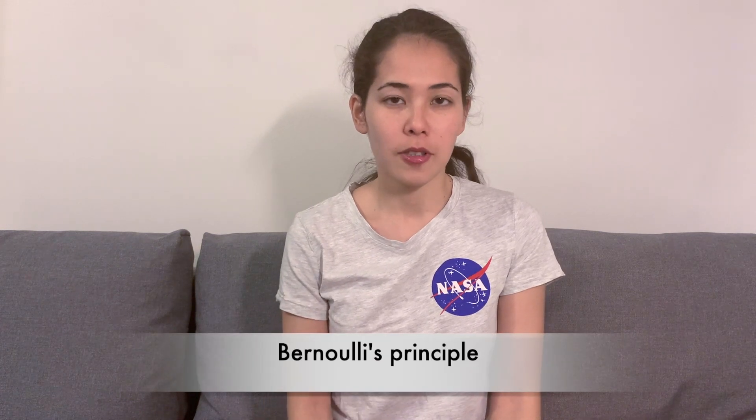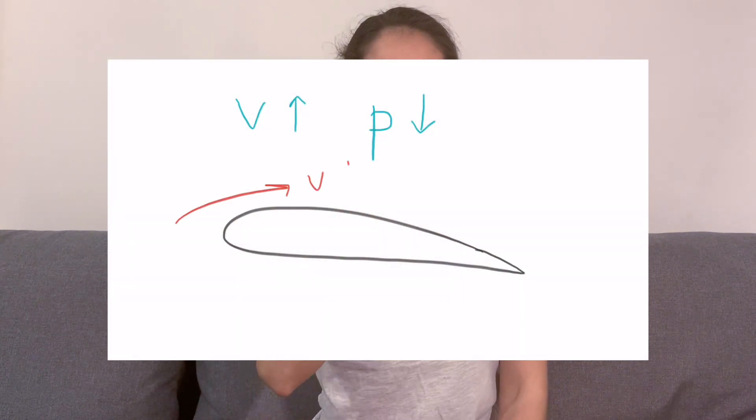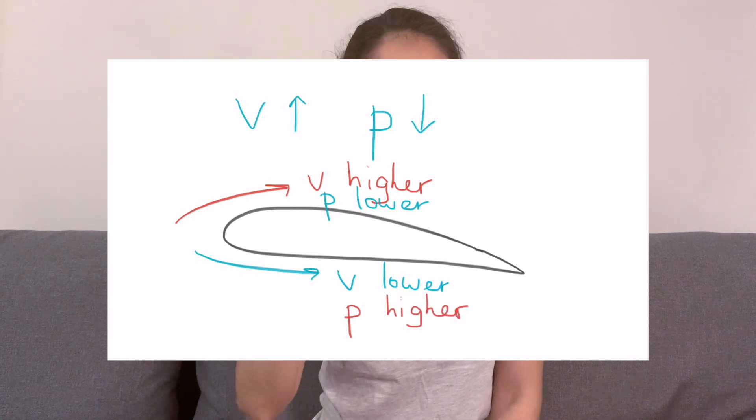We talked about lift a few videos back, and some people commented that that theory was wrong. But in reality it's not entirely wrong. That principle of lift generation was based on Bernoulli's principle: if fluid velocity increases, the pressure decreases. When the airfoil is moving through the air, the air becomes faster above the wing, so the pressure decreases above it. We get a pressure difference between the lower and upper surface of the airfoil. If we put the aircraft in a wind tunnel or use pressure measuring devices on the wings, we will measure in reality that the pressure above the wing is actually lower.